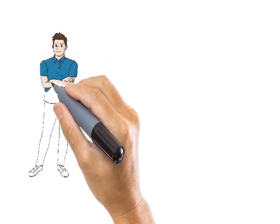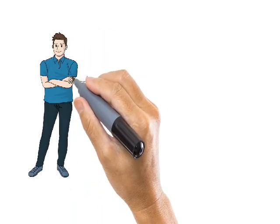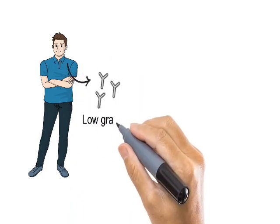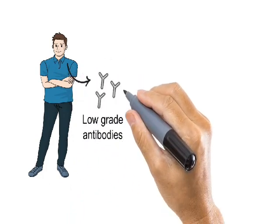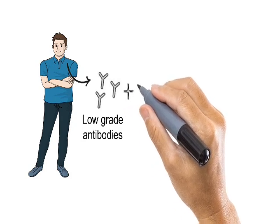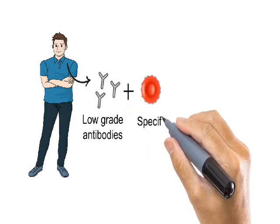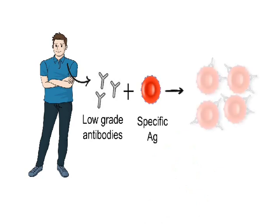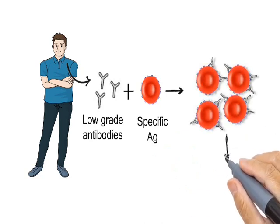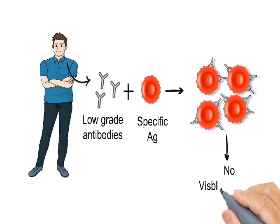If a person's blood or serum contains such low-grade antibodies and we try to detect them by agglutination or precipitation — by simply adding the specific antigen — the antibody will bind to the antigen, but the reaction will not become visible as agglutination or precipitation. That is why it would be very difficult to detect such antibody molecules.